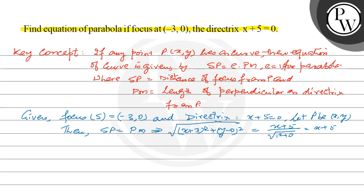Now on squaring both the sides, we have (x+3)² + y² = (x+5)².